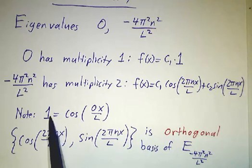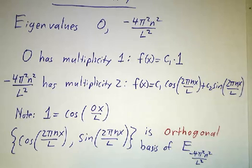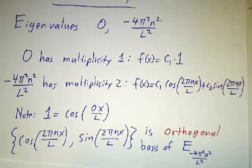And sin(2πnx/L), where here n starts with 1. And these functions are orthogonal because our matrix was Hermitian. We get an orthogonal basis for the eigenspace. You consider them for all n, and you get an orthogonal basis for the entire vector space.